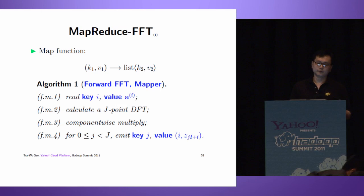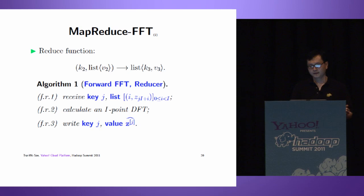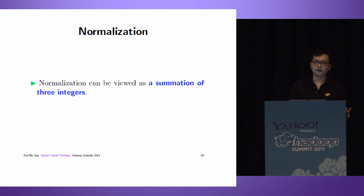Here is our MapReduce algorithm. We have two functions: a map function that computes a J-point DFT then component-wise multiplication, and a reduce function that computes an I-point DFT. Once we finish the DFT, we get the product polynomial. However, the coefficients may be too large, and we perform normalization.